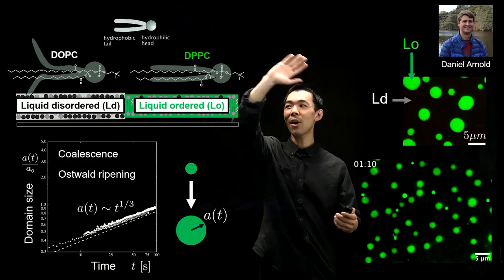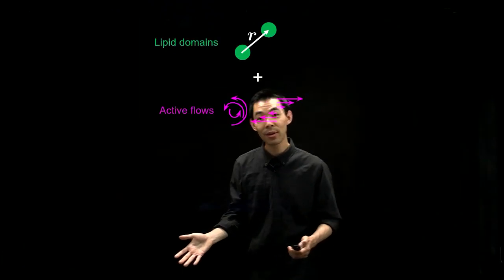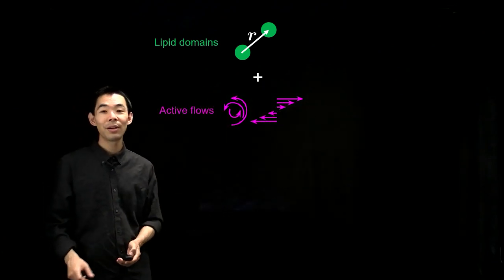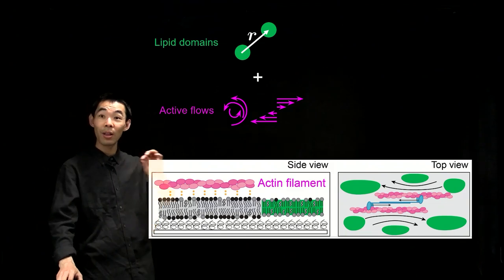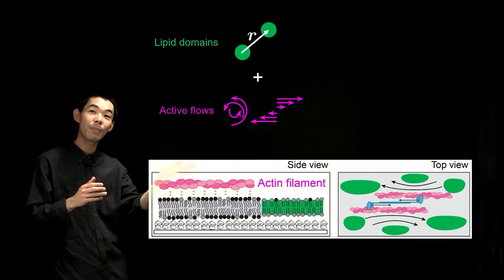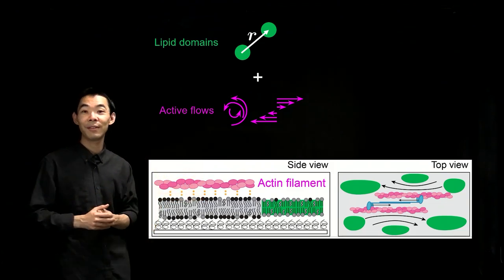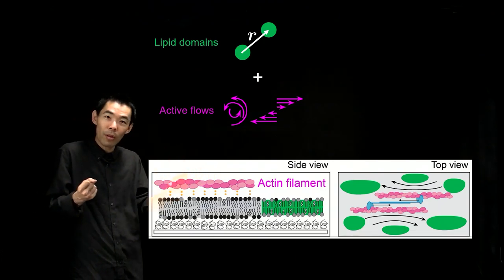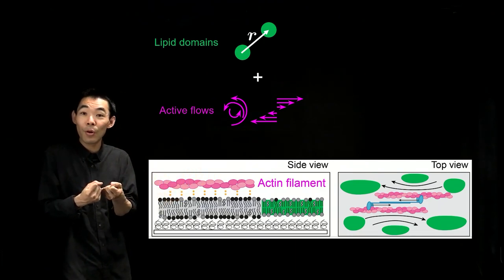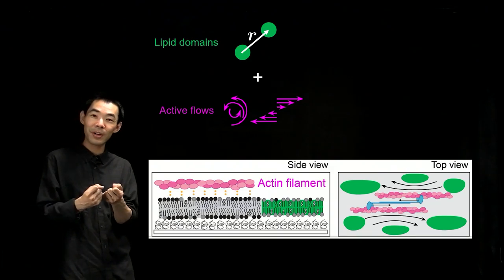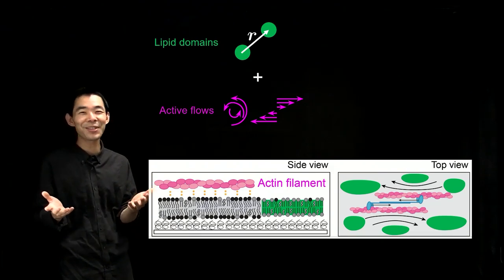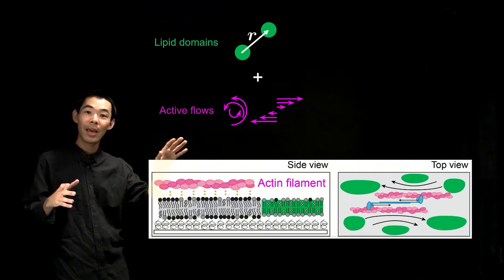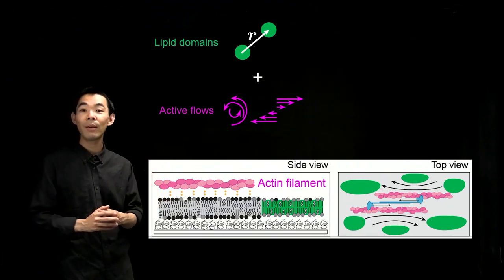So how does all of this change when you add active flows? What Daniel did was to get actin biopolymers to bind onto the bulk majority LD phase. If we add molecular motors, they pull along the filaments, generating forces and flows along the majority phase, which, if successful, will entrain the LO green domains through those forces and flows.